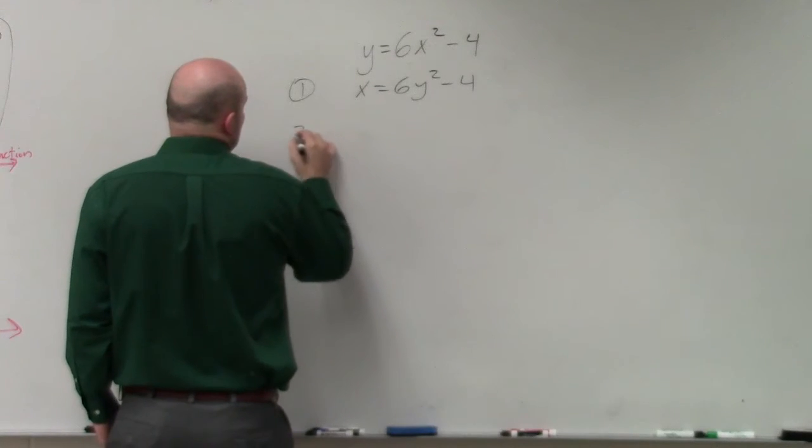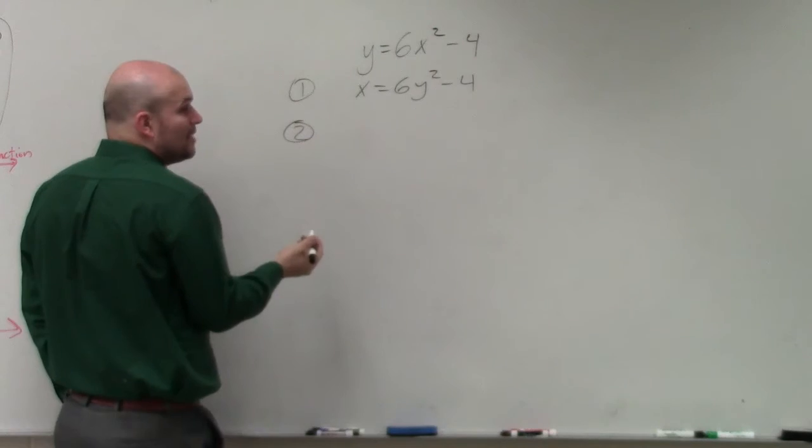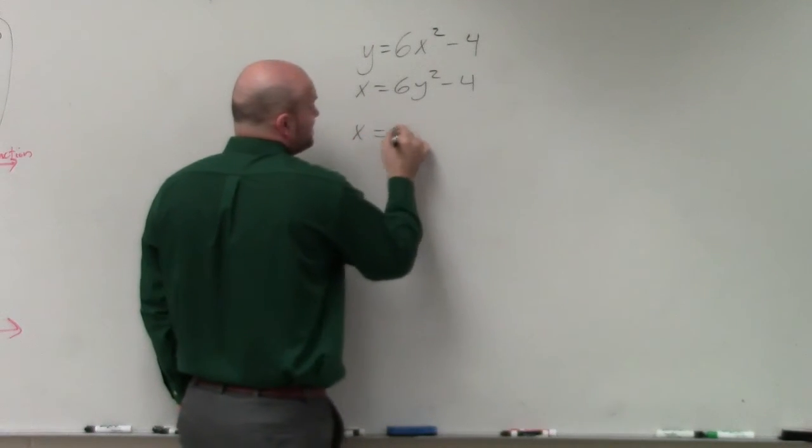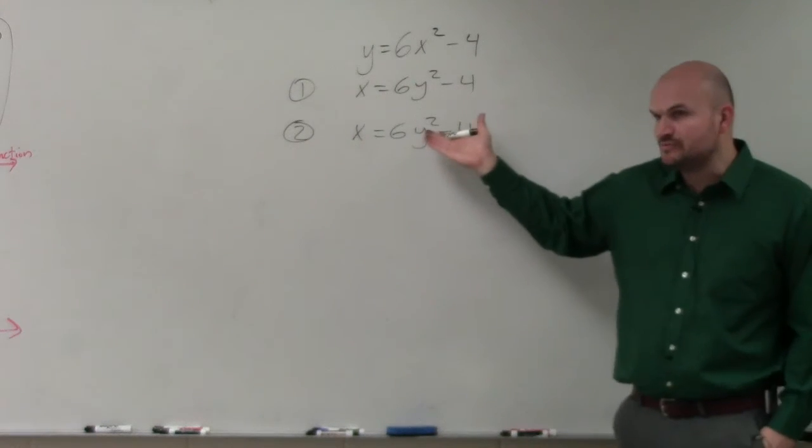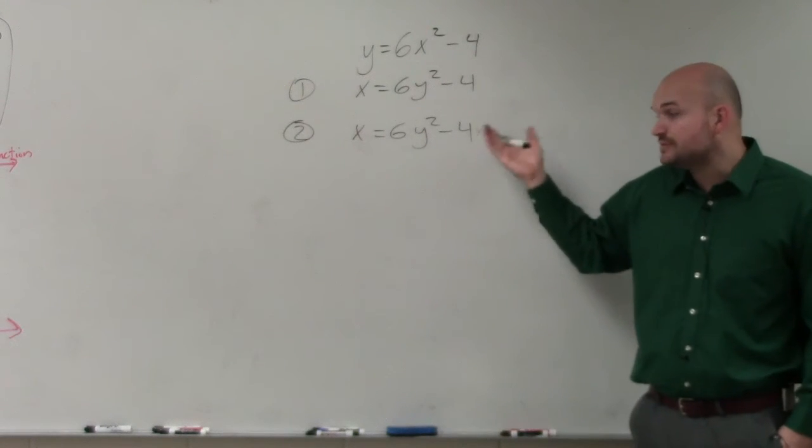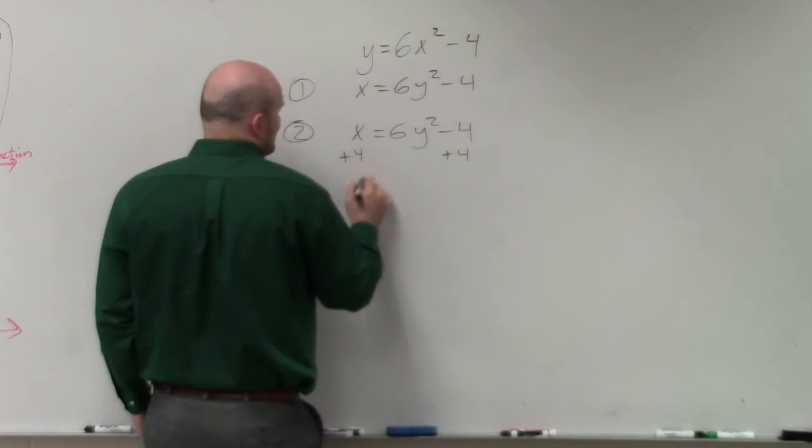Step number two, or actually this would be step number one was up here, but step number two now would be to solve for x. So now you have to use inverse operations. Hopefully you guys remember when we were doing solving quadratics, we did inverse operation for here. First thing we always need to do is undo addition and subtraction to your variable. So I'm going to add a four to both sides.